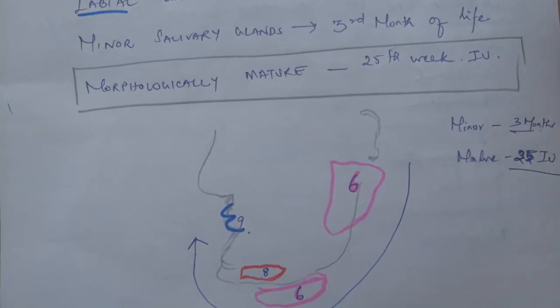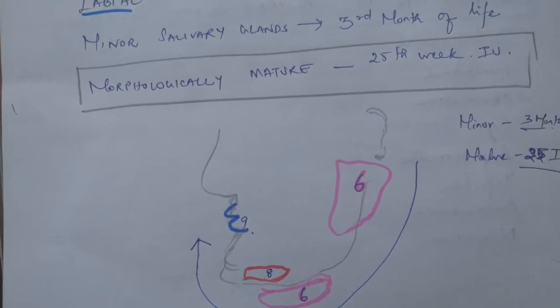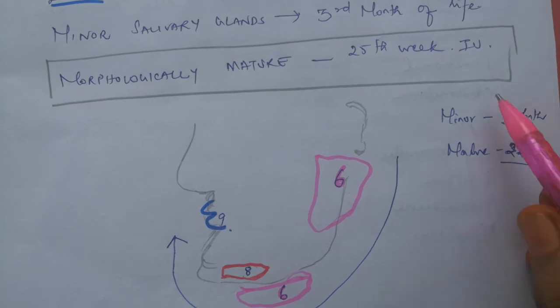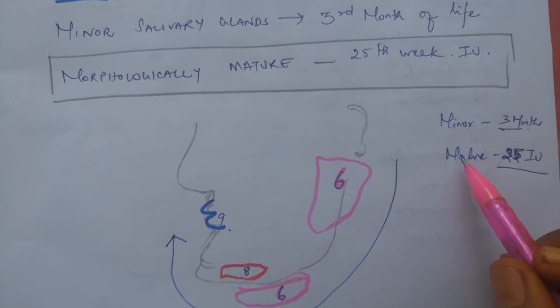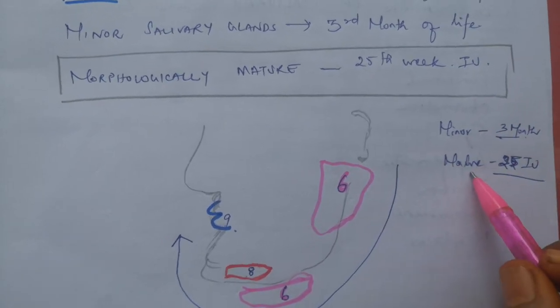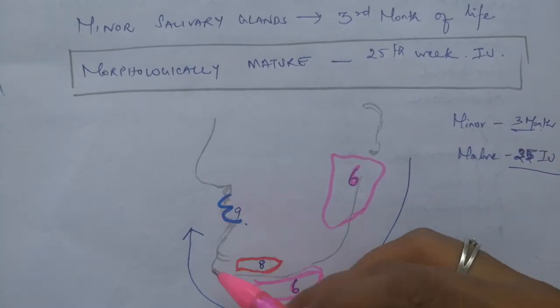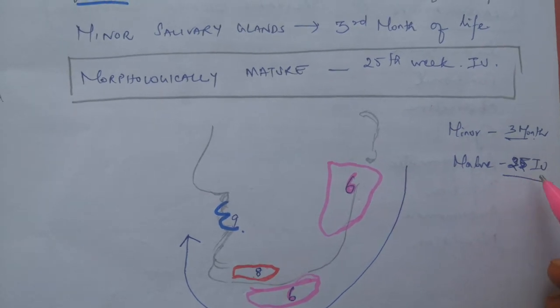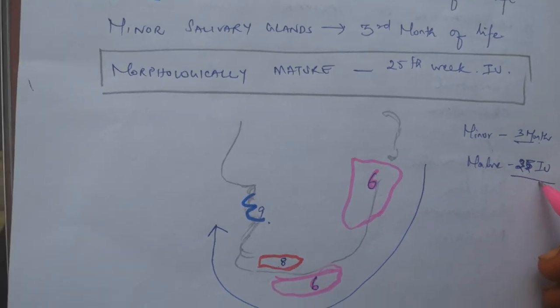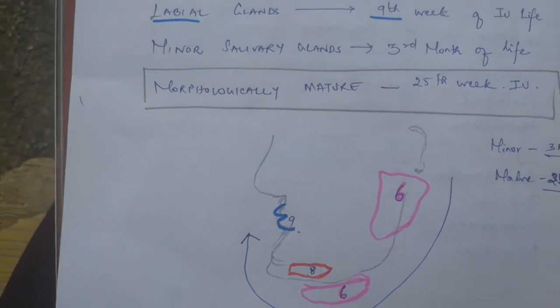Also remember that the minor salivary glands start developing by the 3rd month of life, and maturation of all these glands occurs at the 25th week of intrauterine life.